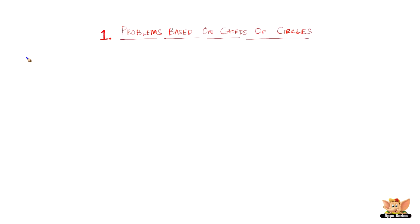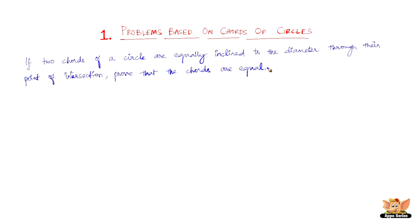In this video, let us solve some problems based on chords of circles. The question goes like this: if two chords of a circle are equally inclined to the diameter through their point of intersection, then prove that the chords are equal.